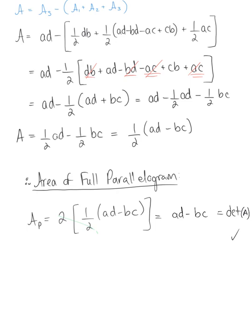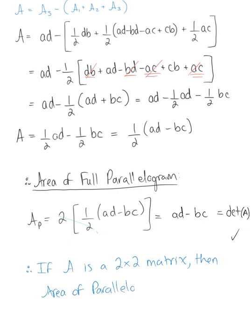Therefore we have confirmed: if A is a 2 by 2 matrix, then the area of a parallelogram is equal to the absolute value of the determinant of matrix A.